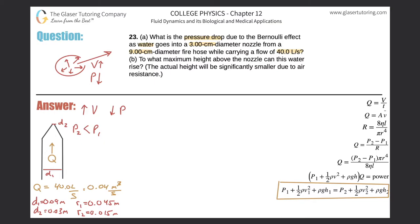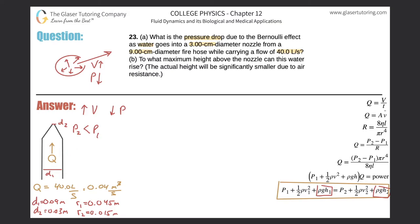Now let's go to the equation. Is there anything I can cancel? I'm going to assume there's really no change in height of the two locations — they don't give me any height, so we can't assume a height and we've got to get rid of it. So that goes away. What I'm left with is P1 plus one-half rho-water V1 squared equals P2 plus one-half rho-water times V2 squared.